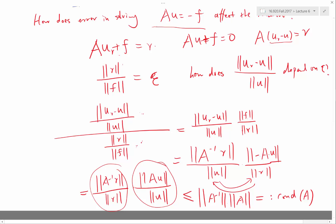And the definition of the matrix norm, for example, the matrix norm of A inverse is the maximum of such ratios over all possible r's you can choose.